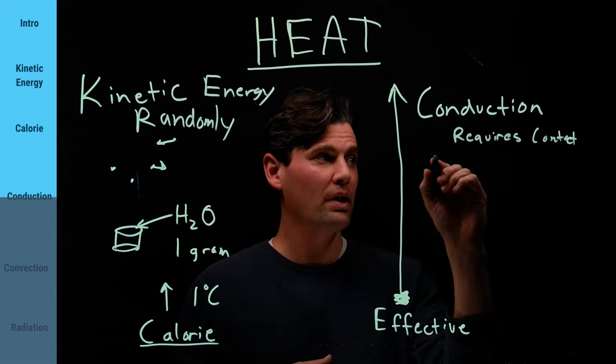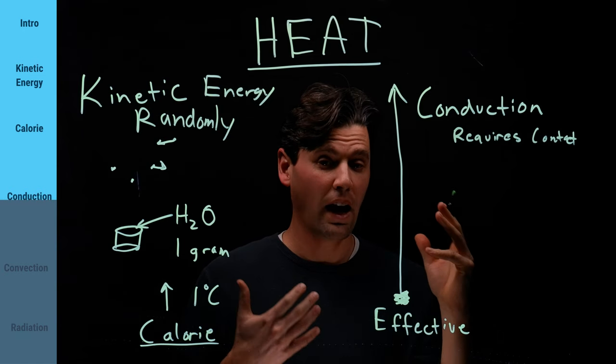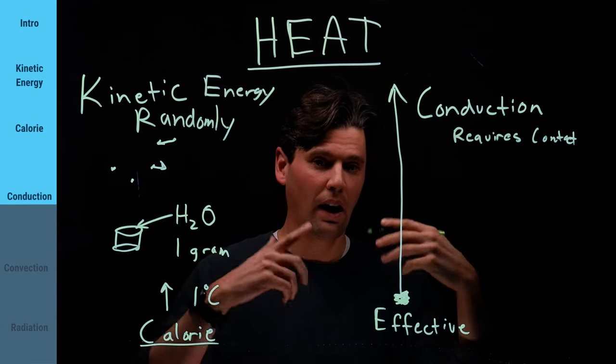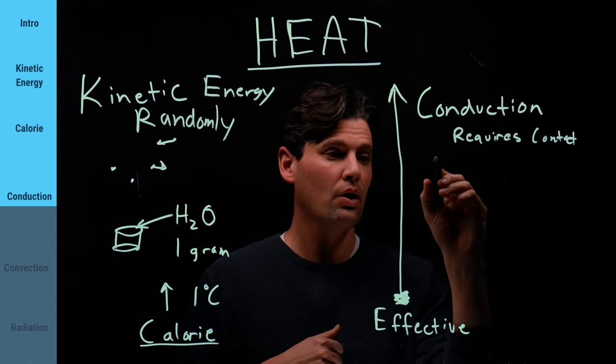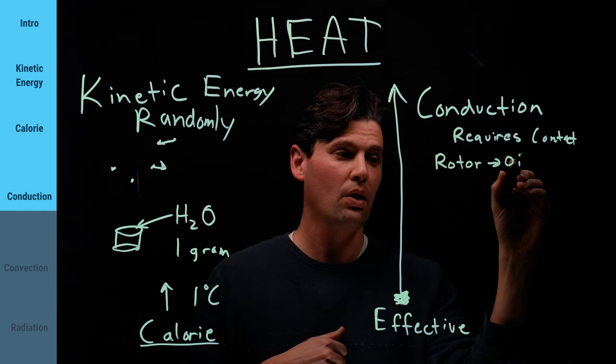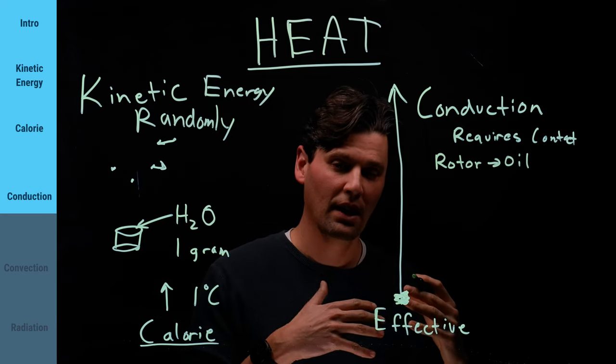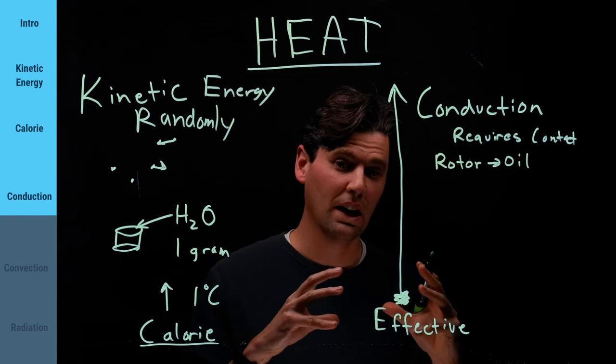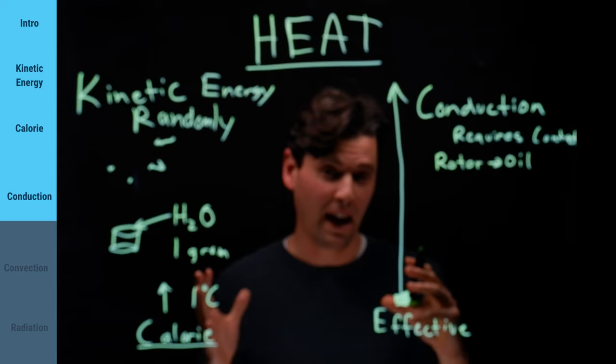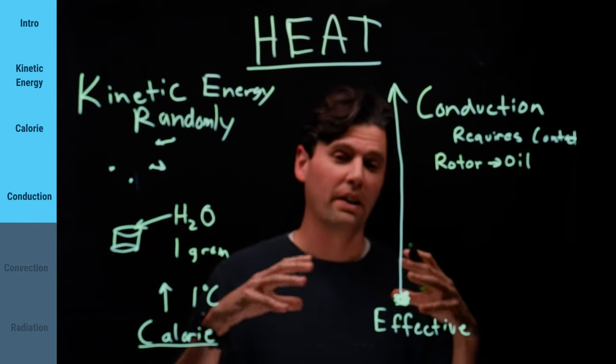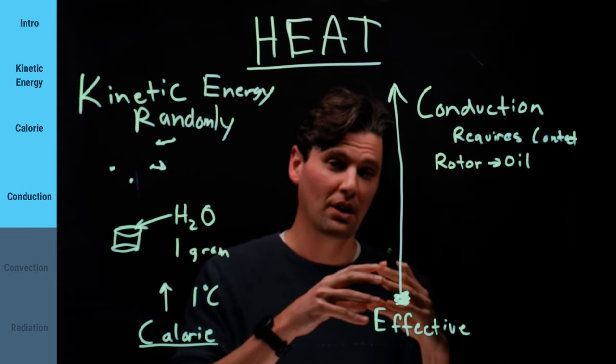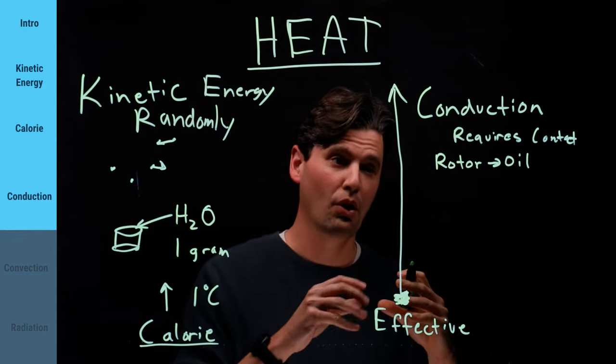So an example of this is the conduction in an x-ray tube, the conduction from the rotor that's moving to the oil. So again, this is two things that are touching directly. And that's transferring the bulk heat, which is on the big anode. We have anode connected to rotor, and that bulk amount of heat is going to be transferred most efficiently via that conduction to the oil.